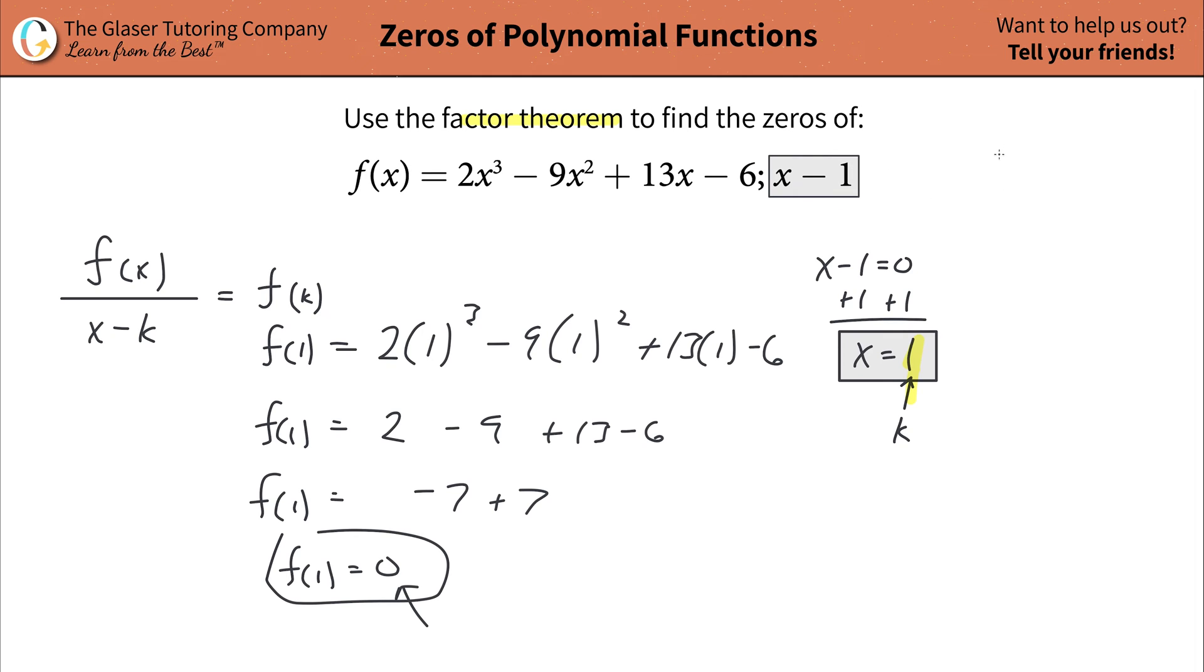If that's a factor to find the zero, then you just also set it equal to zero and find the value of x. So not only is k, not only did we find the value of k, but we also found basically a zero. K and a zero is the same thing in this problem.